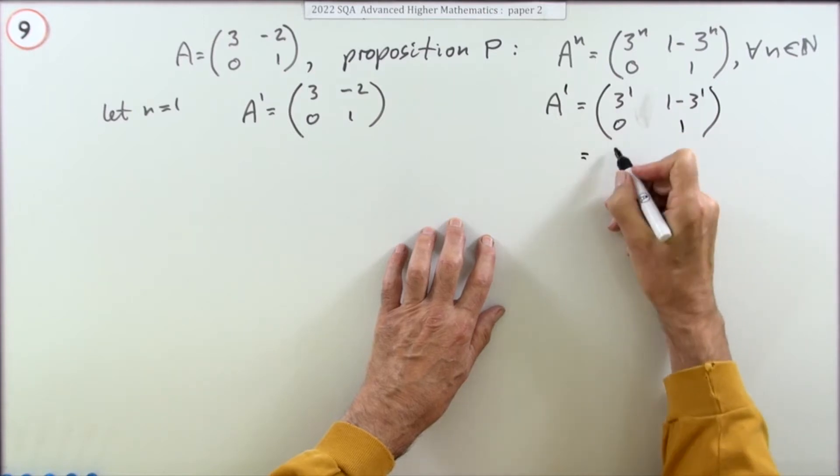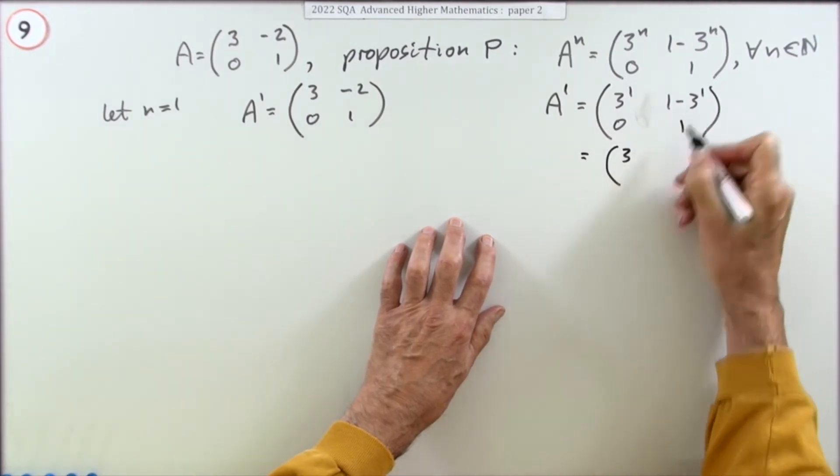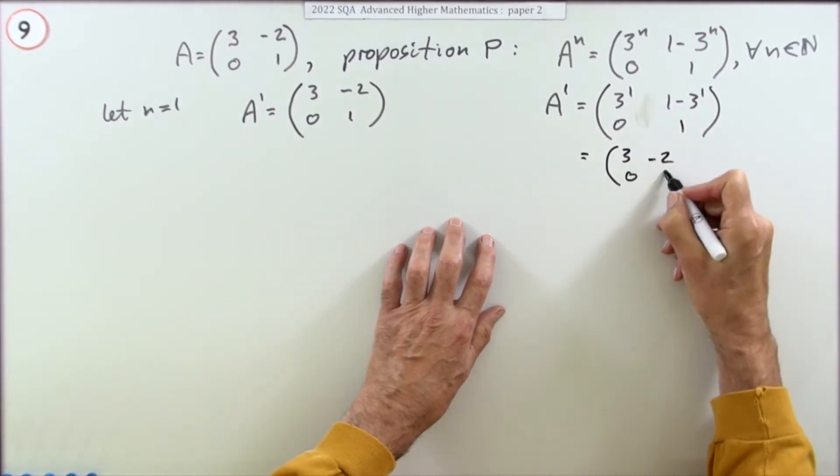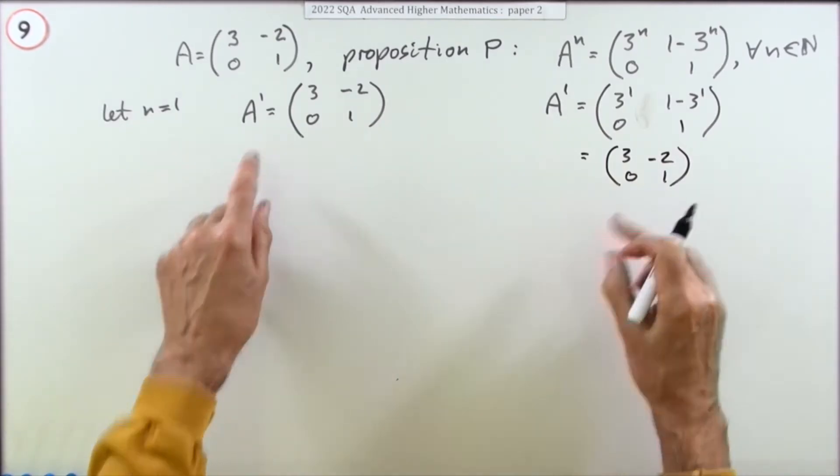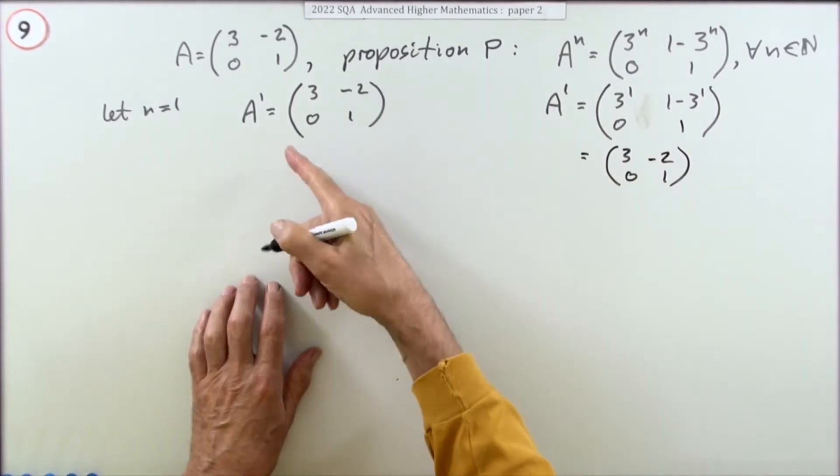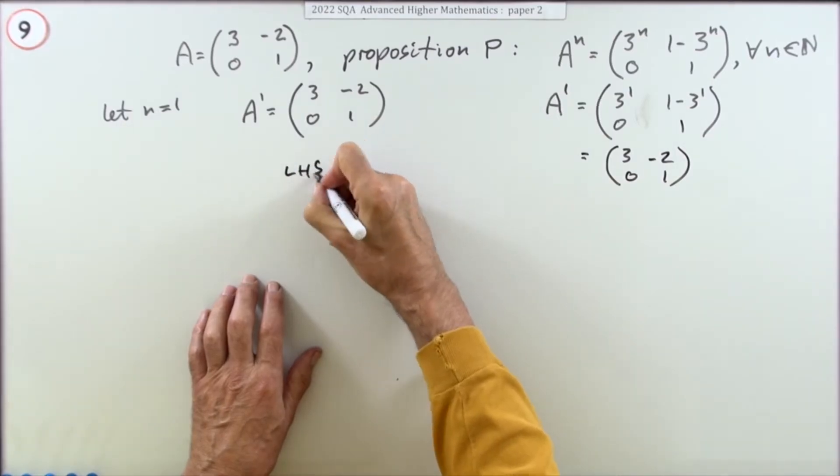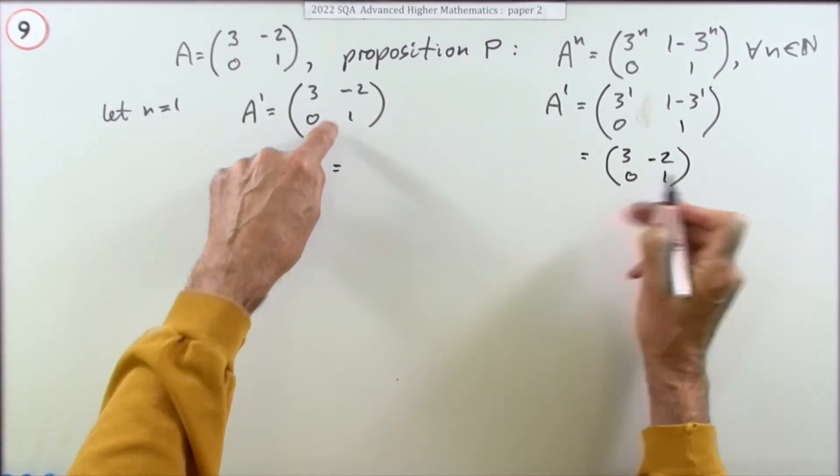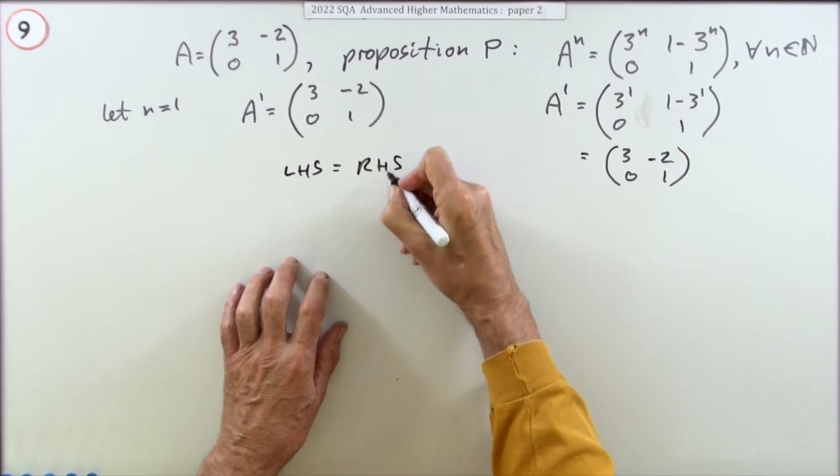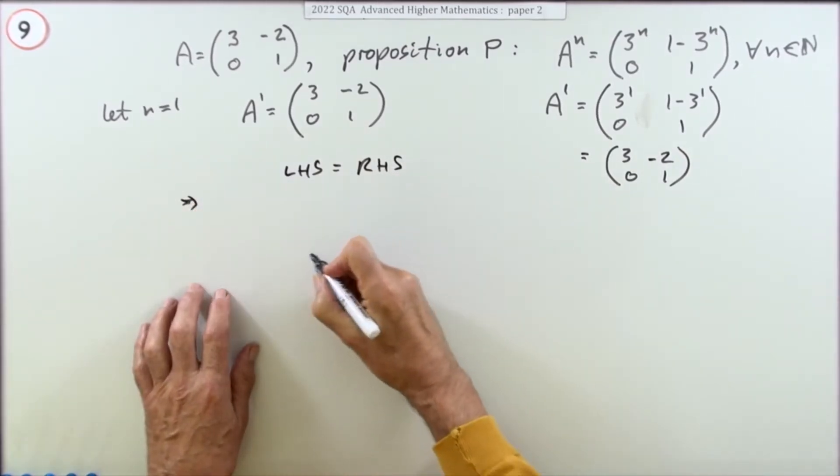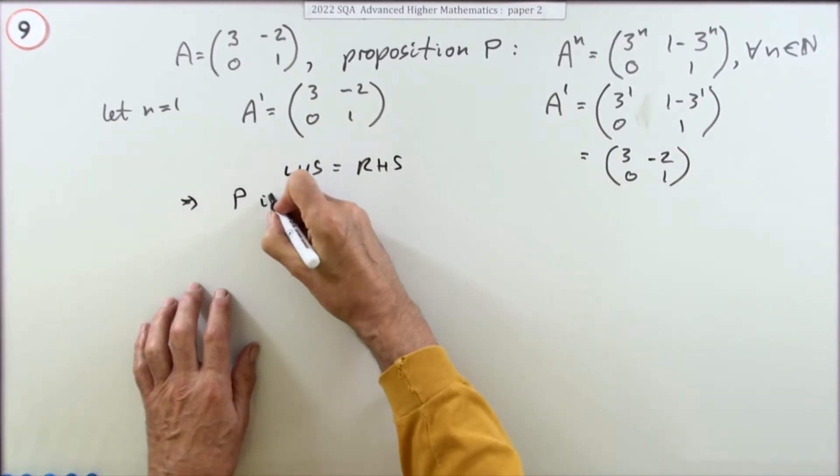That just becomes (3, -2; 0, 1). In fact you've got the same answer. The left hand side produced this result, the right hand side produced the same result, so I can now come to a conclusion that means P is true for n equals one. Doing that gets the first mark.